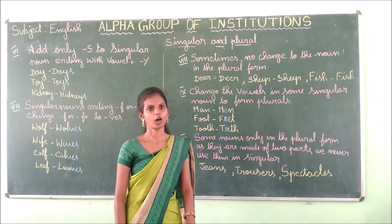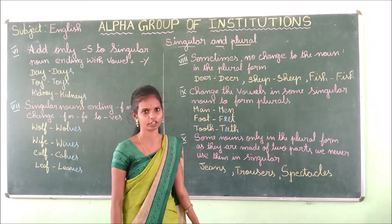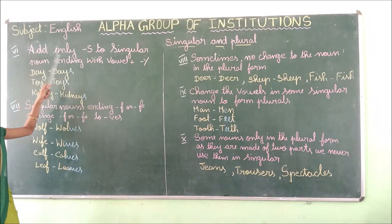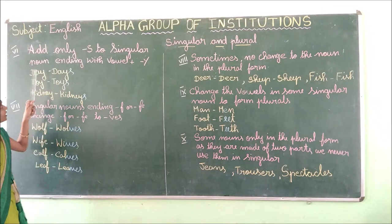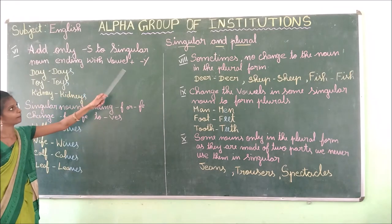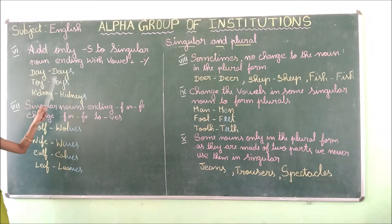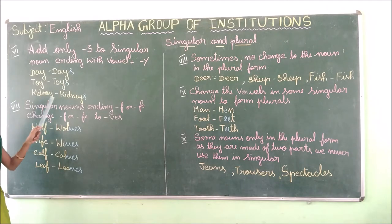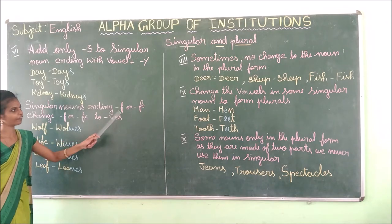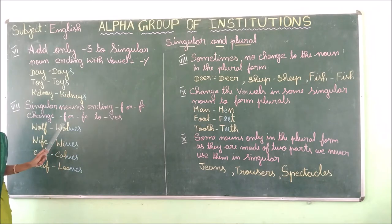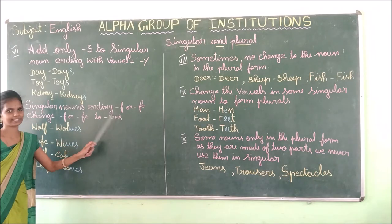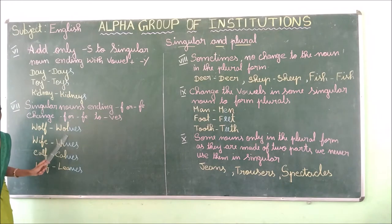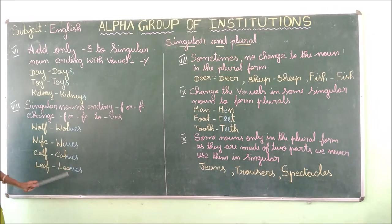Now let us recap all these rules. Add only S to singular nouns ending with vowel plus Y: day→days, toy→toys, kidney→kidneys. Singular nouns ending in F or FE — change to VES: wolf→wolves, wife→wives, calf→calves, leaf→leaves.